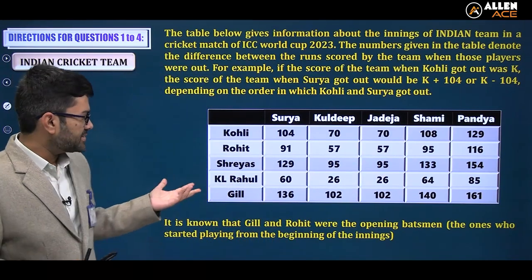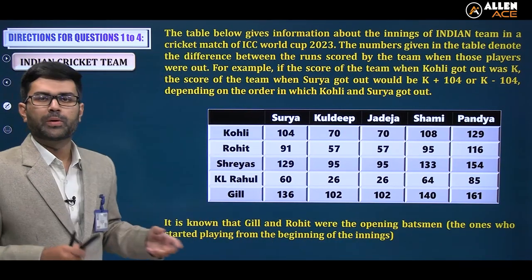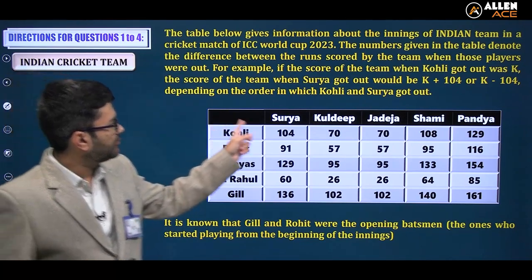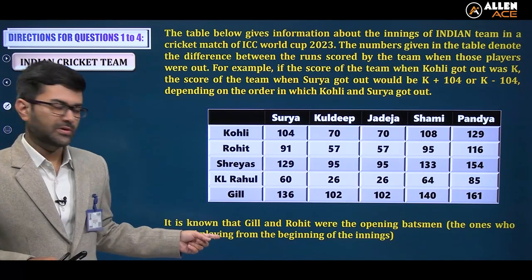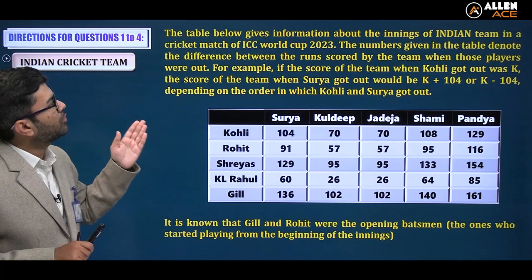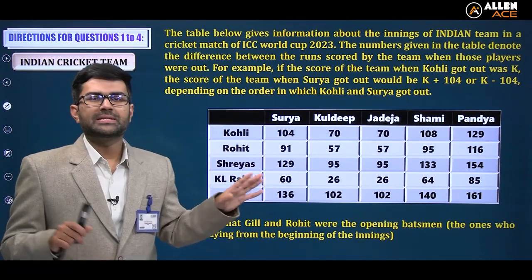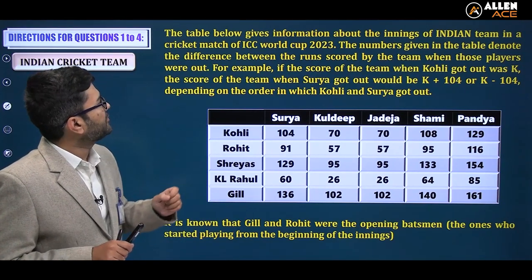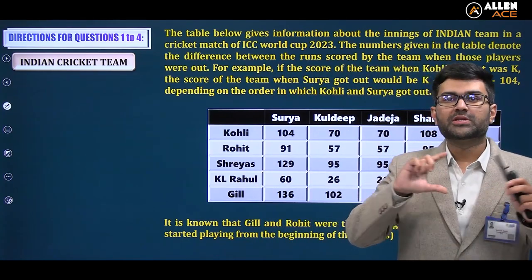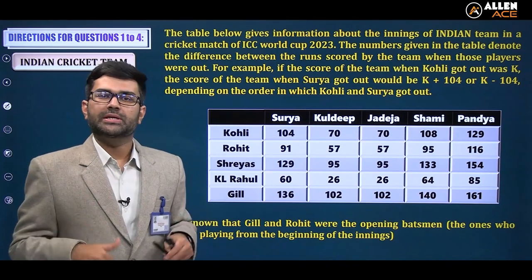Let's understand what this table means and how we'll unlock it. Gill and Rohit were the opening batsmen — these two batsmen opened the innings. The table gives information about the innings of the Indian team in a cricket match of ICC World Cup 2023. The numbers in the table denote the difference between the run scored by the team when those players were out — not individual player scores, but the team score at the time of dismissal.